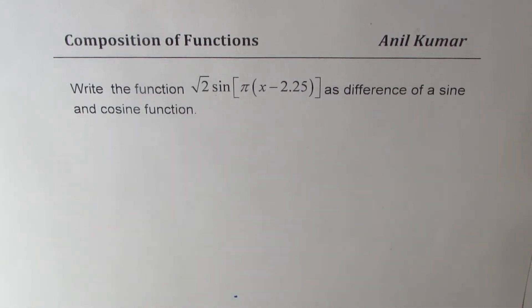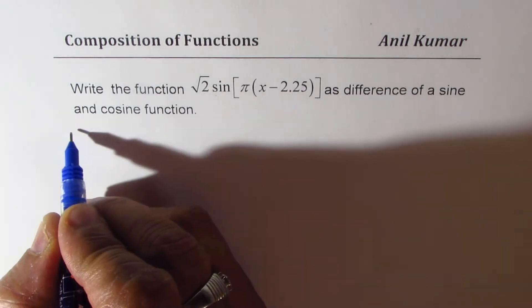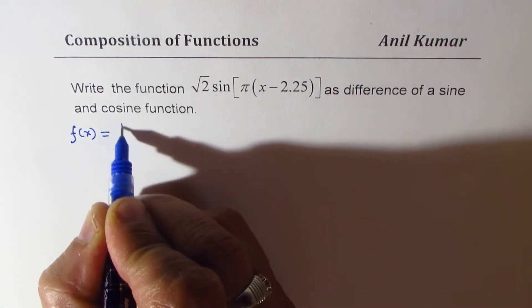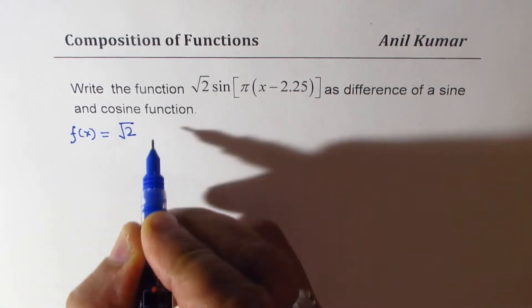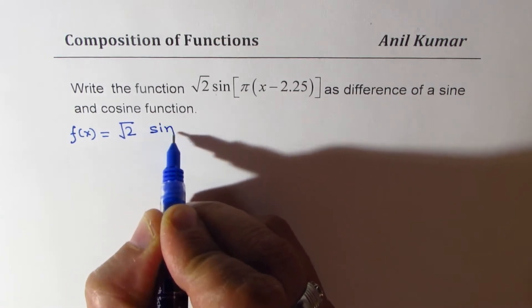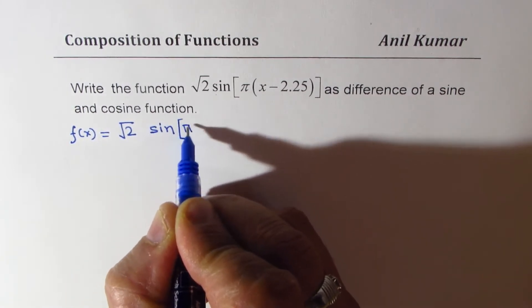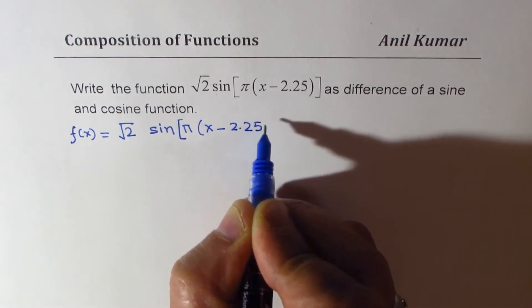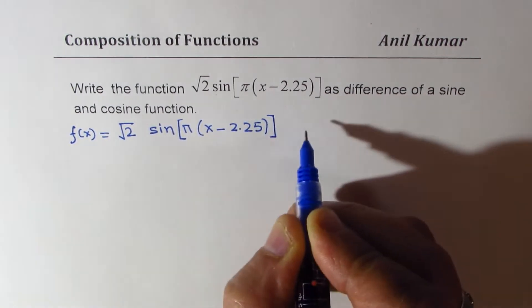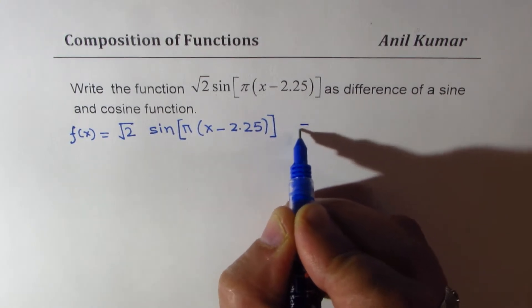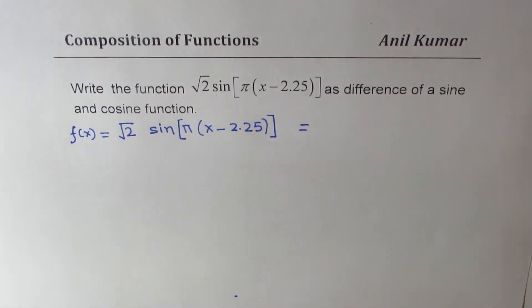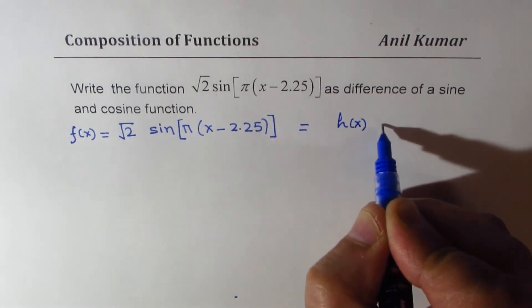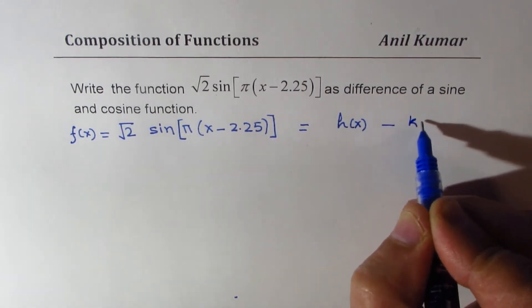So what we are trying to say here is that we have a function, let's say f of x, which is equal to square root of 2 sine of pi x minus 2.25. And we have to write this function as a combination of two functions, which is h of x minus k of x.